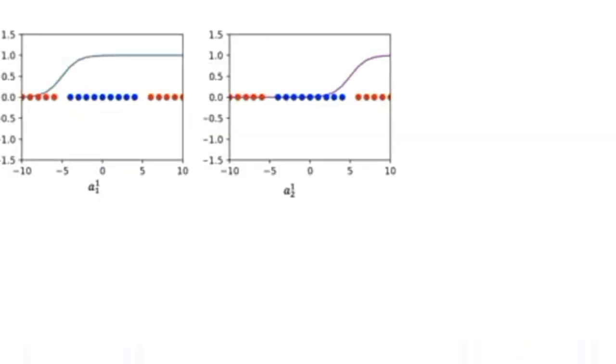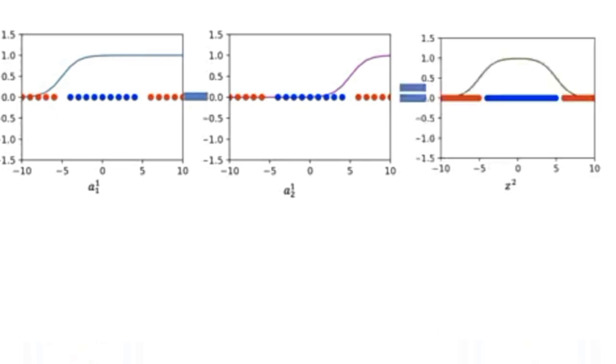Consider the following sigmoid functions. We call them a subscript 1 and a subscript 2. If we subtract the second sigmoid function from the first sigmoid function, we get something similar to the decision function. We can also apply the following operations with a linear function. That is, just subtract the second activations from the first activation function.